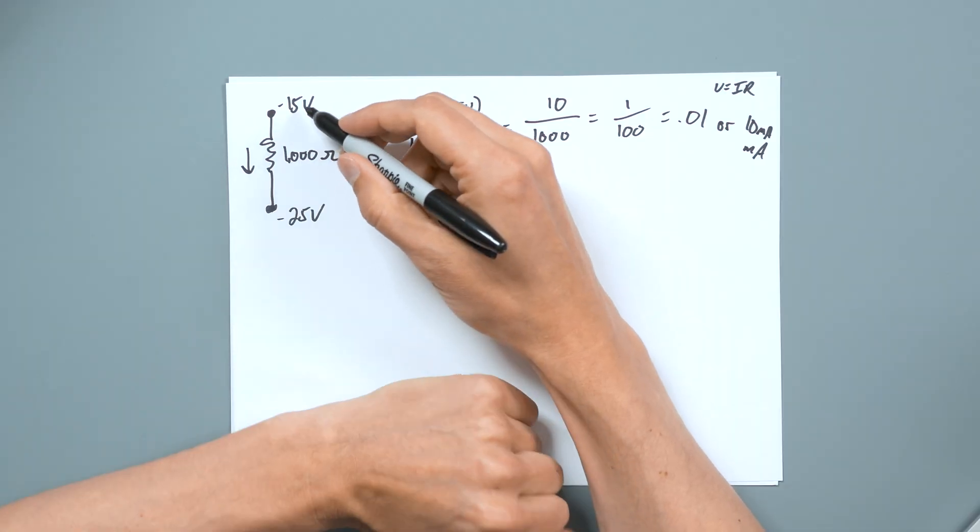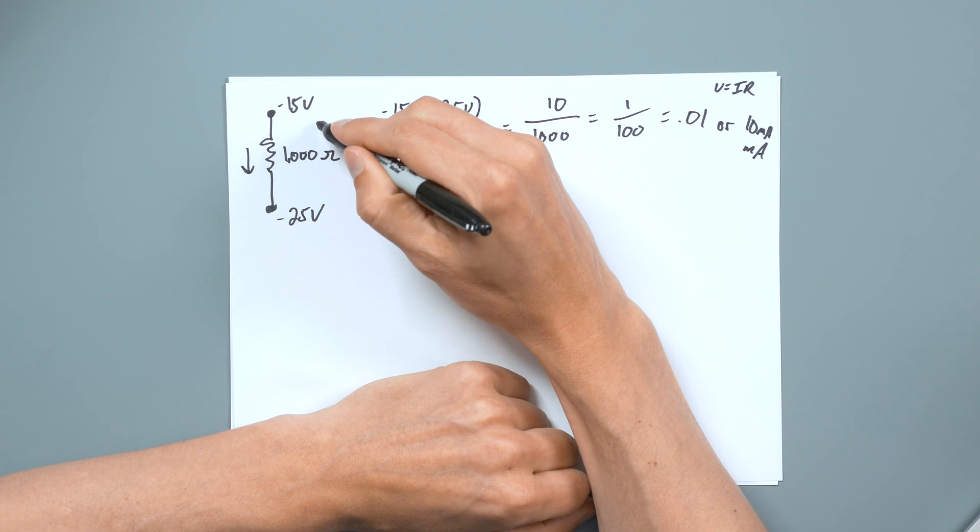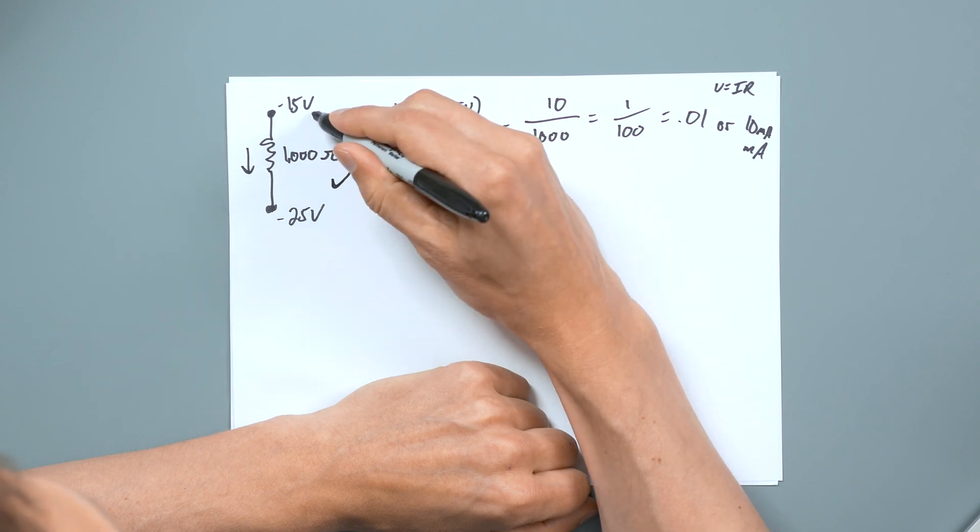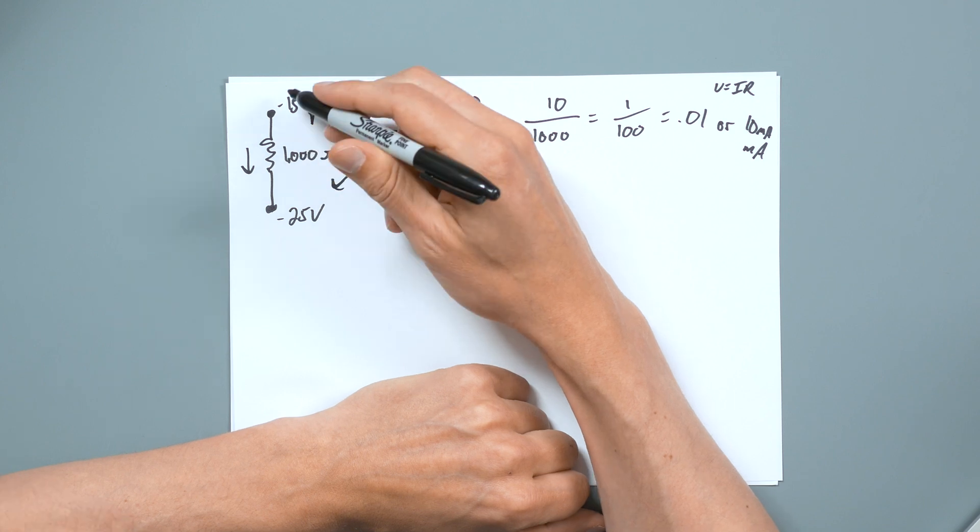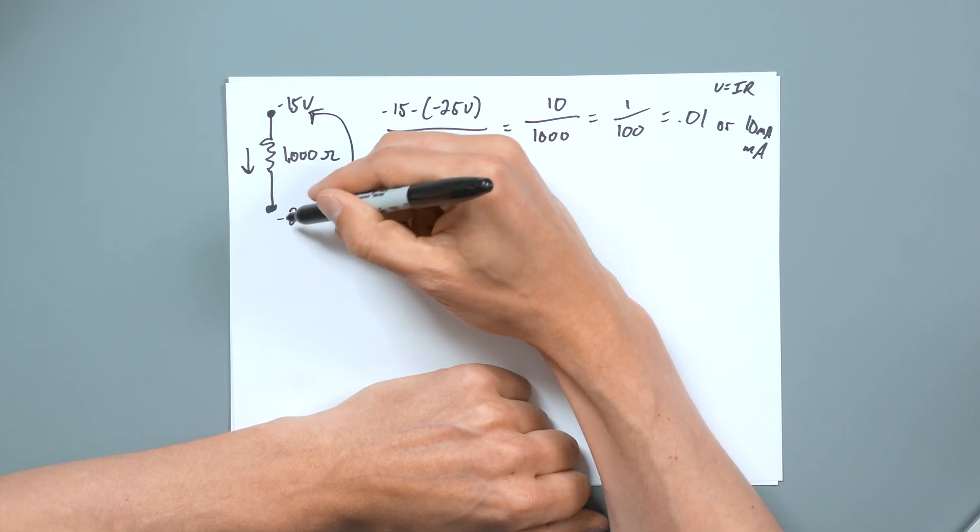But the point I wanted to bring with this was again, that different potential, it doesn't matter. So even though this is a negative number, and this is a negative number, it's all about the relationship between the two. It's all about that voltage across this. So just because this is negative 15 and negative 25, in this case, because there's nothing else, those numbers are basically arbitrary.